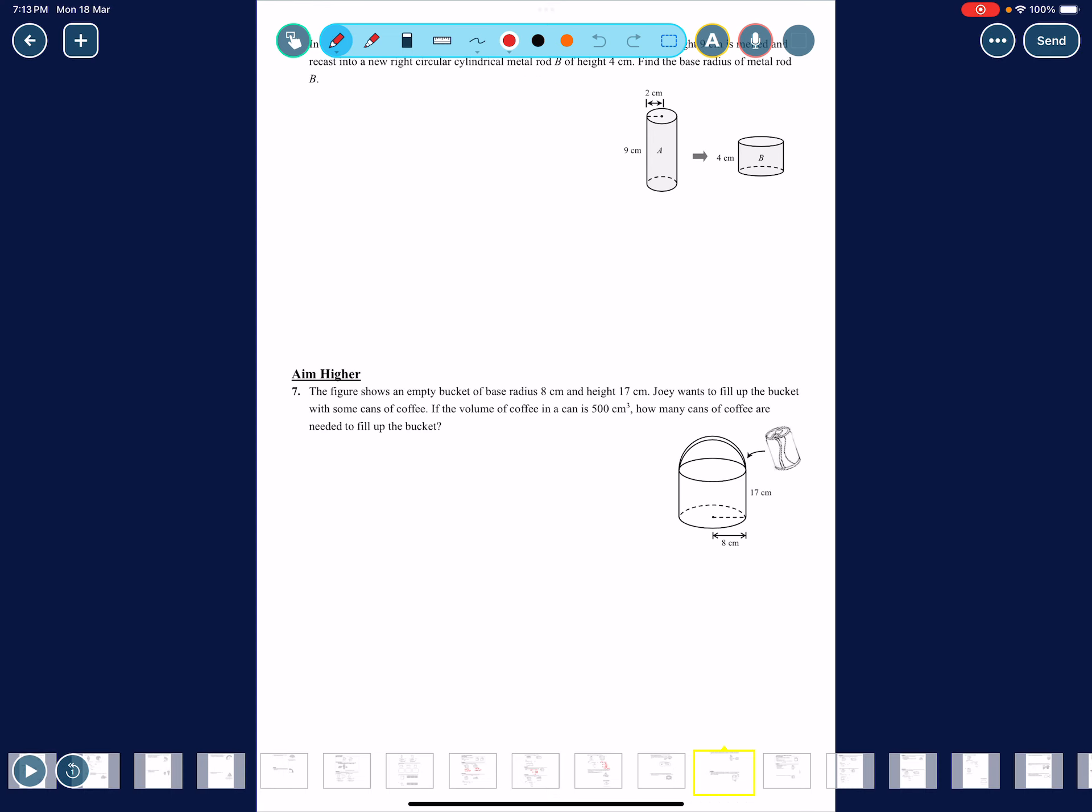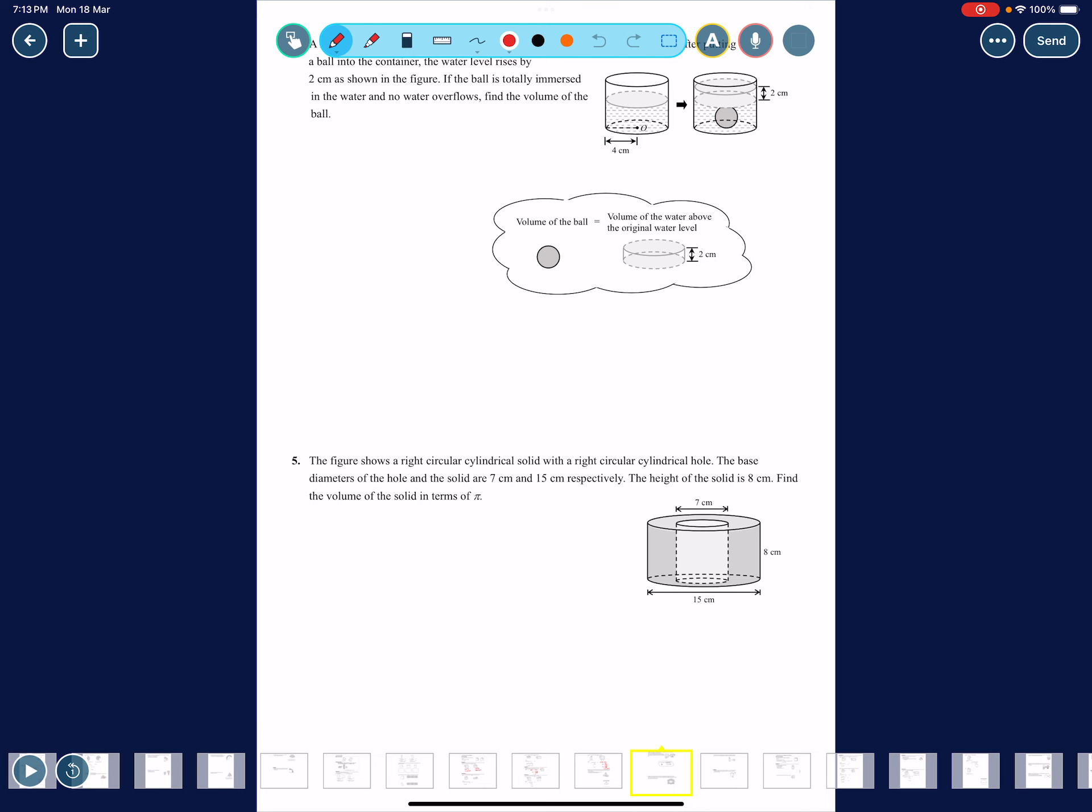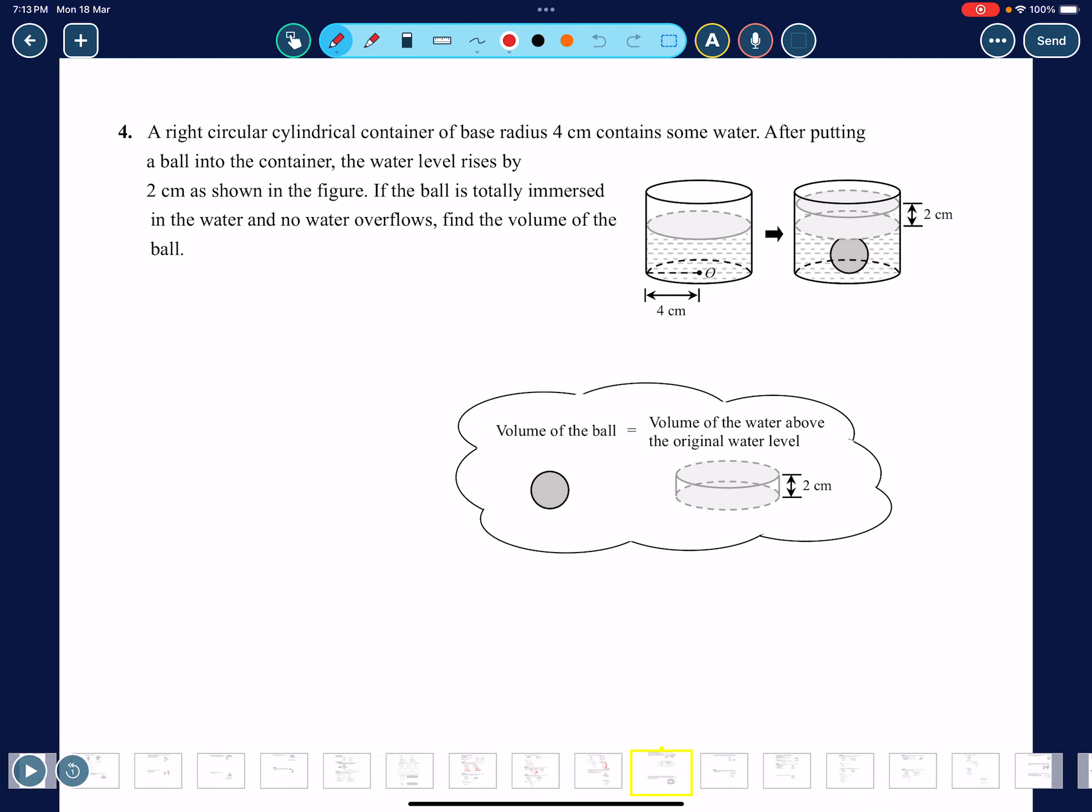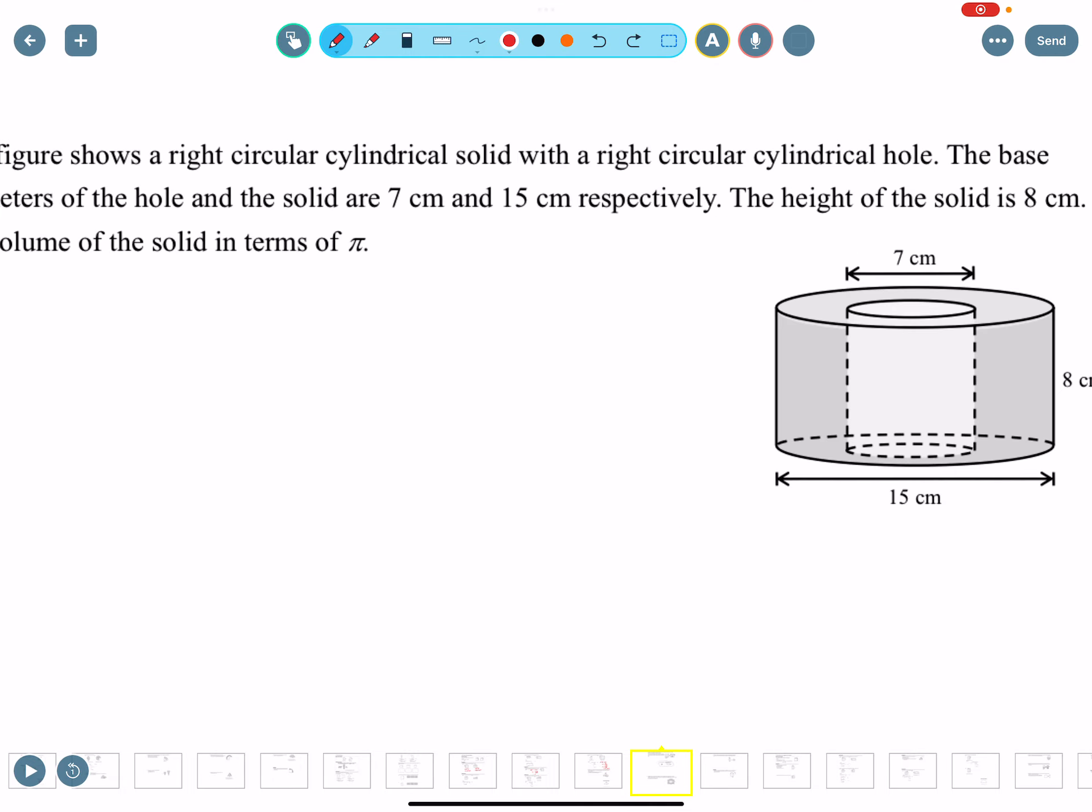Let me talk about this one. If the ball is totally immersed in the water, let's find the volume of the ball. Basically over here, the extra volume after putting the ball is over here, right? This is a cylinder shape. So basically you just calculate the volume of that one using πr²h. r is 4, h is 2. That's one type of difficult question. I'll go for this one. This one is a very common one.